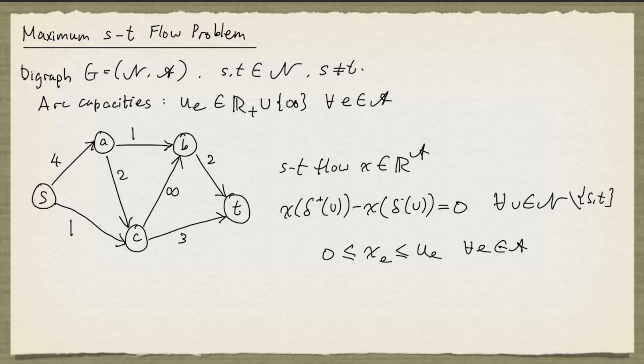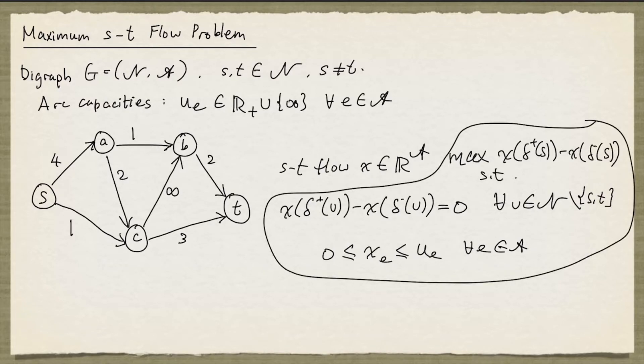The maximum s-t flow problem is to find an s-t flow that maximizes the net flow out of the node S, which is called the value of the s-t flow. Clearly this is a linear programming problem, and there is no difficulty solving such a problem. But because this problem has a combinatorial structure, there might be specialized algorithms that have better performance than a generic linear programming algorithm. We're going to look at the Ford-Fulkerson augmenting path algorithm.